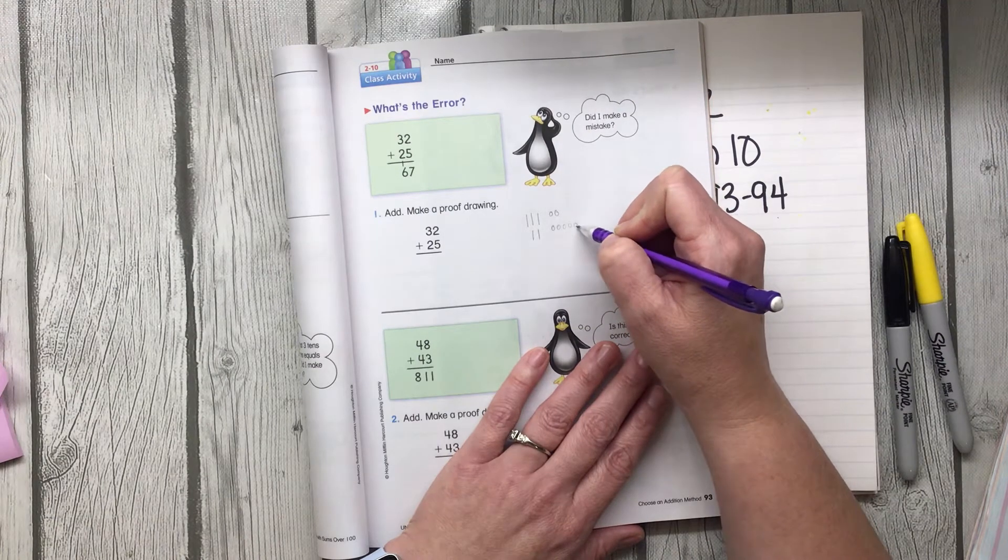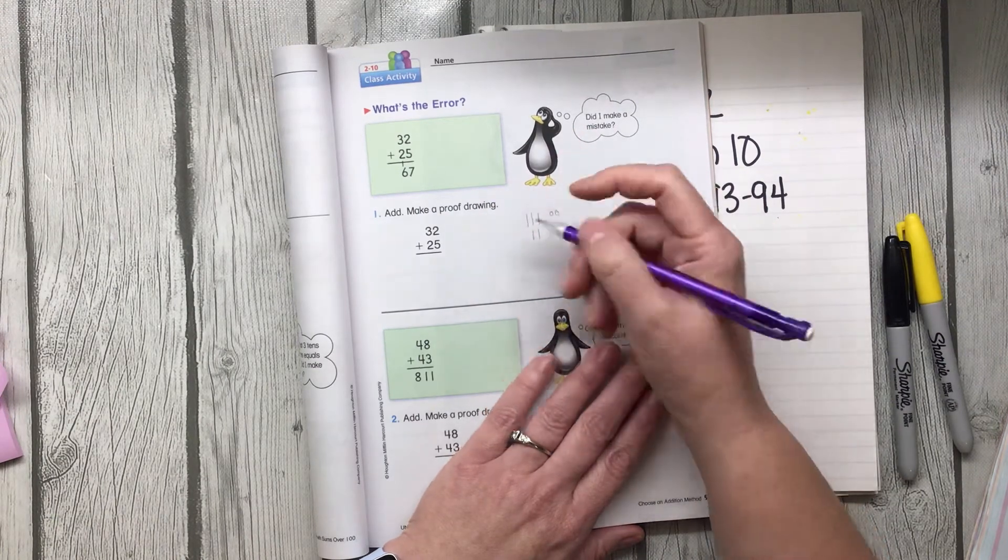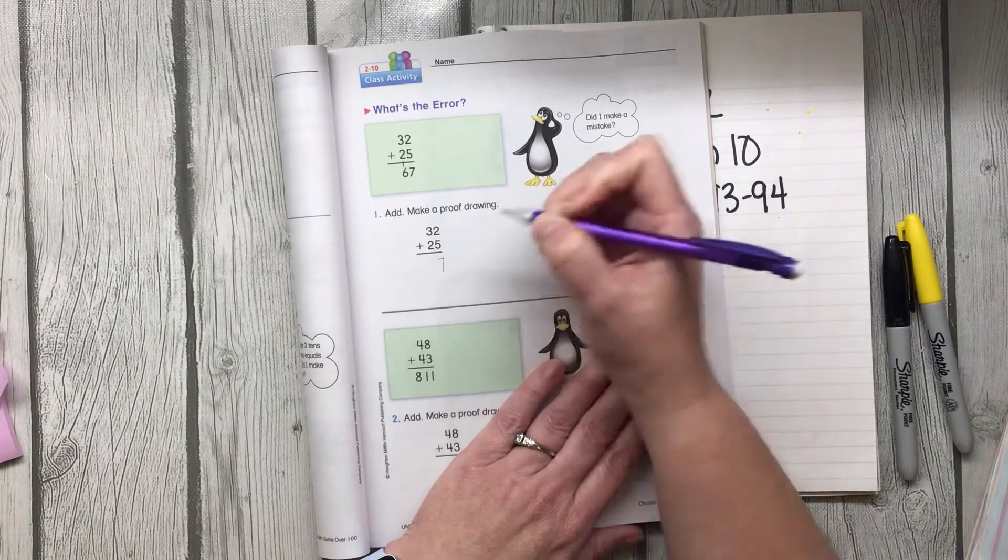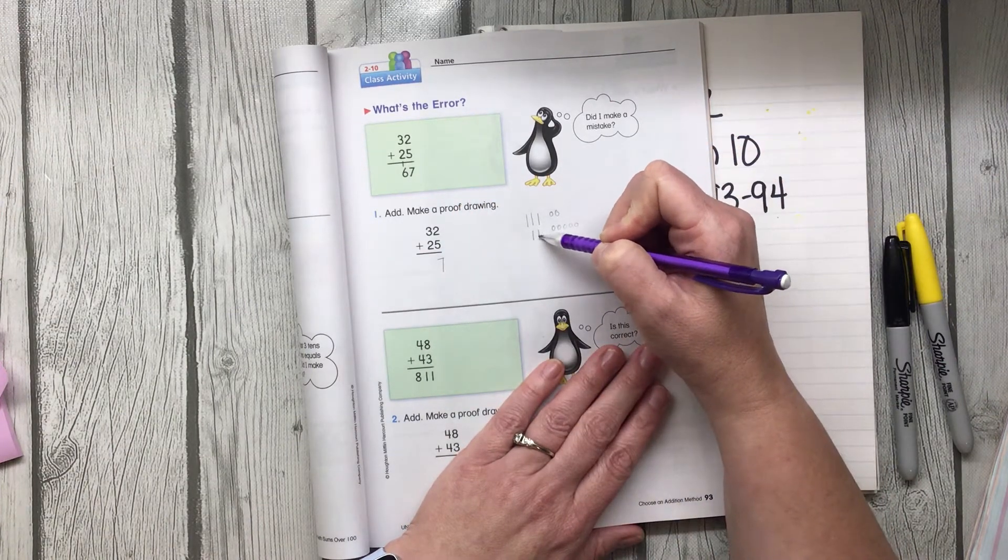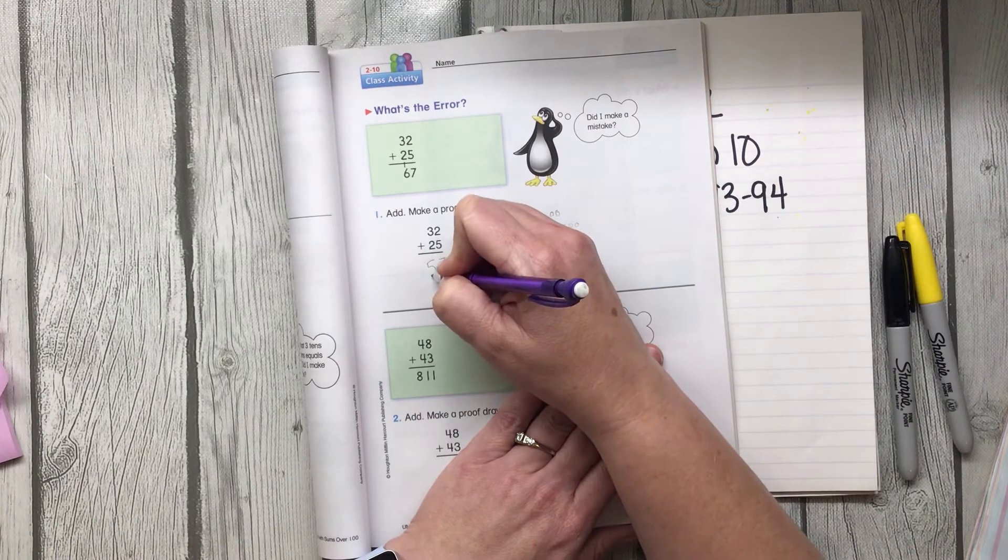So now I'm going to count these up. 1, 2, 3, 4, 5, 6, 7. Hmm. I don't have a new 10 there. And then I'm going to count these up. 10, 20, 30, 40, 50. I don't have a new 100.